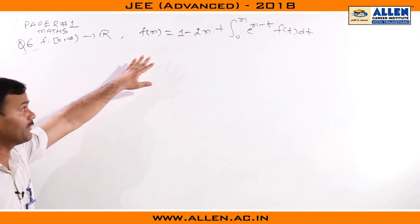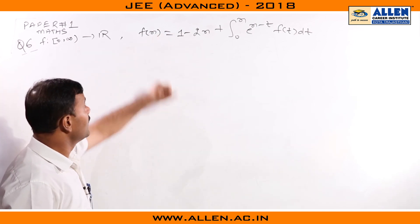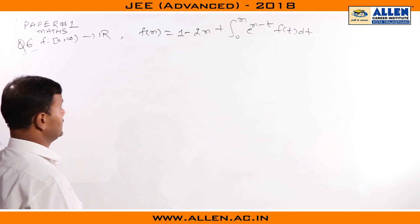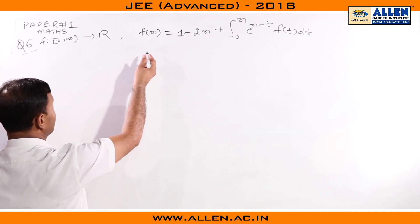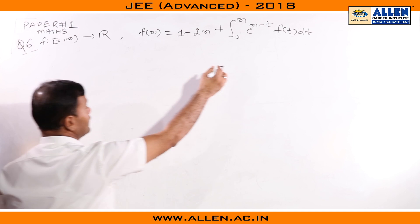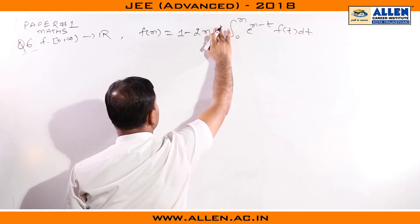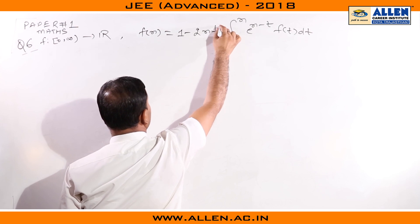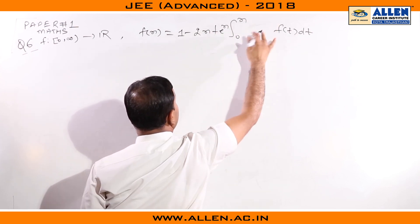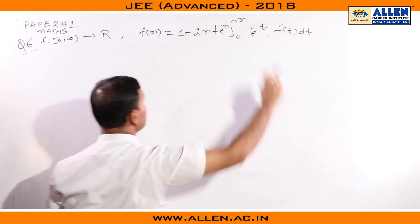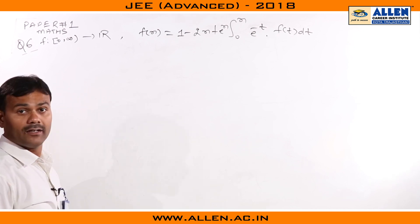How can we find the function f(x) from this equation? First of all, we are integrating with respect to t, so we can bring the factor e^x outside the integral and write this as e^(-t) multiplied by f(t).